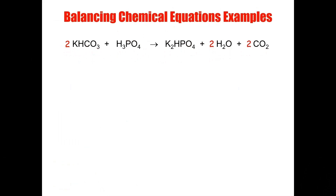By doing that, we also balance the carbon inadvertently — now we have two carbon here and two carbon here. If we do a quick check: two potassium, two potassium; two plus three gives five hydrogen and five hydrogen; two carbon and two carbon; six oxygen and six oxygen; and the phosphate has remained unchanged — one and one. So we have a balanced chemical equation.